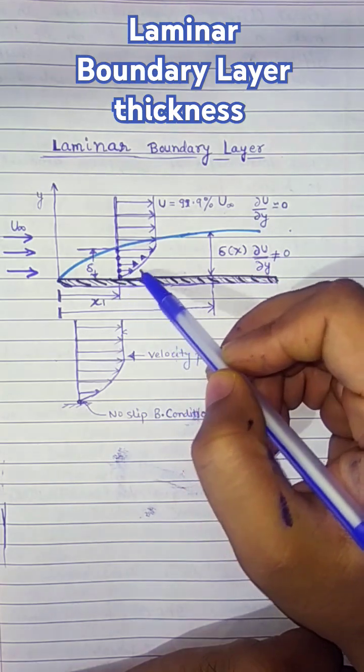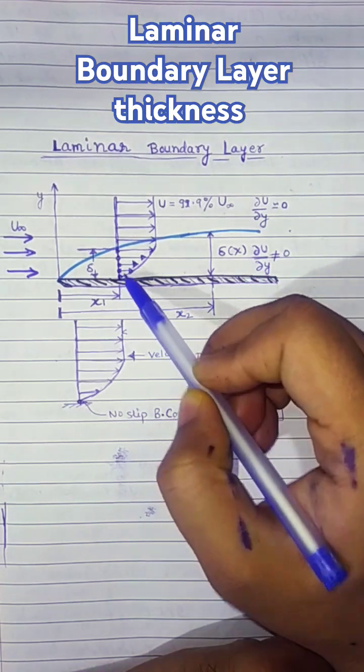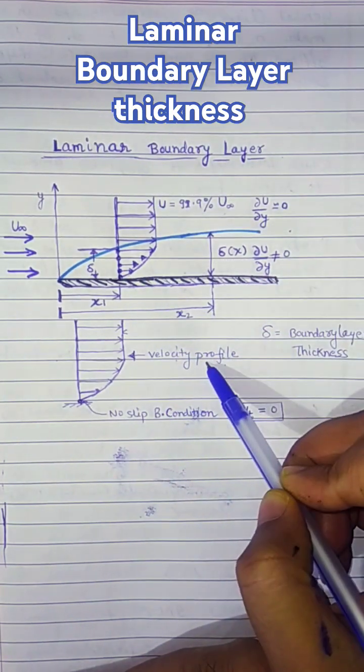If we plot the velocity of different particles away from the wall, we will have a profile which we call the velocity profile.